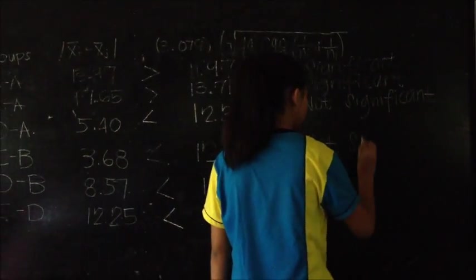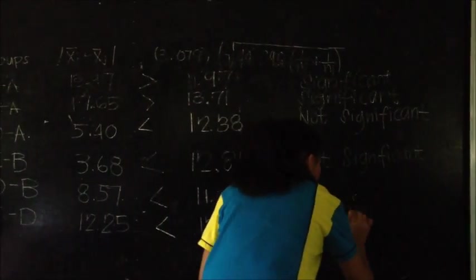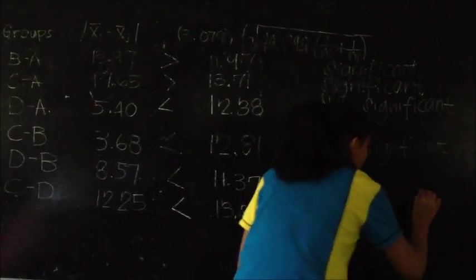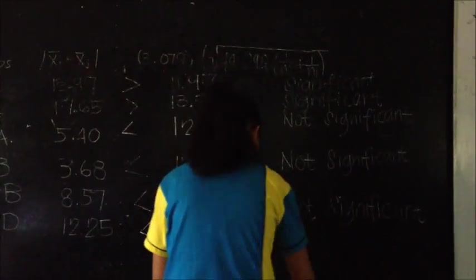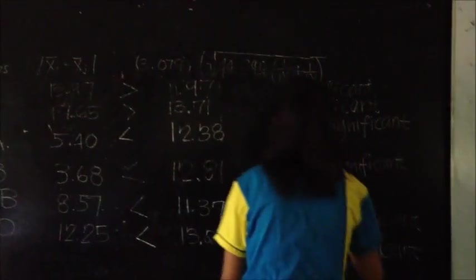Pairs B and A and C and A are significant because the absolute difference of its means is greater than its S value, while the rest of the pairings is not significant because its S value is greater than the difference of their means.